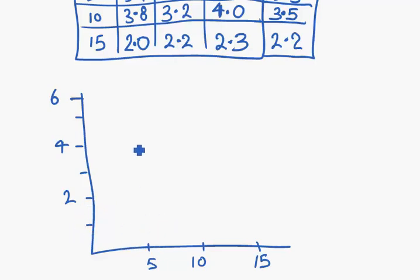At 5, we've got 5.3. At 10, we've got 3.5. At 15, 2.2. With money to graph.